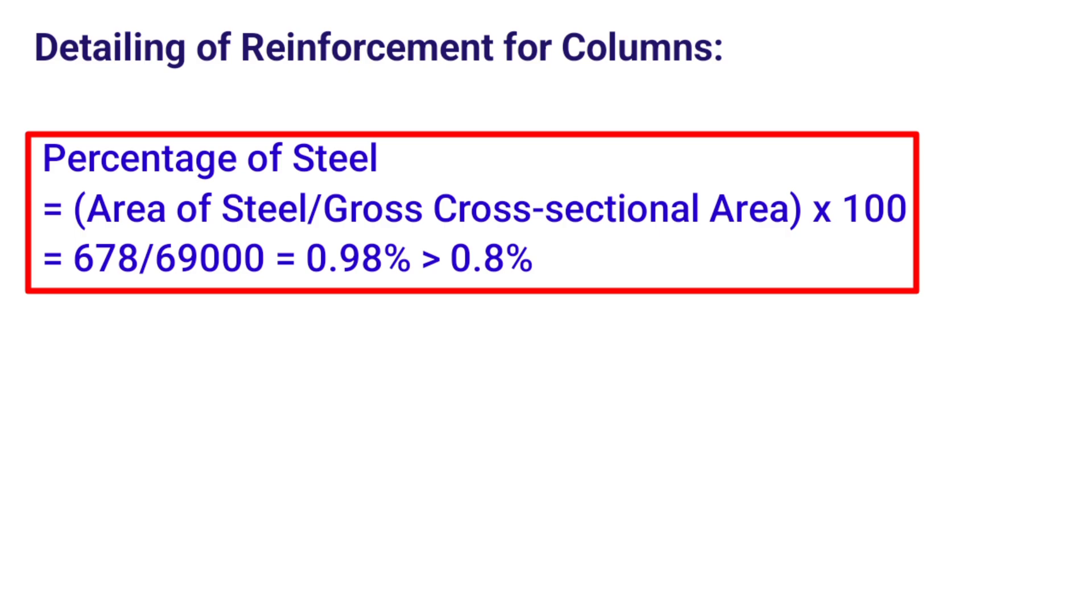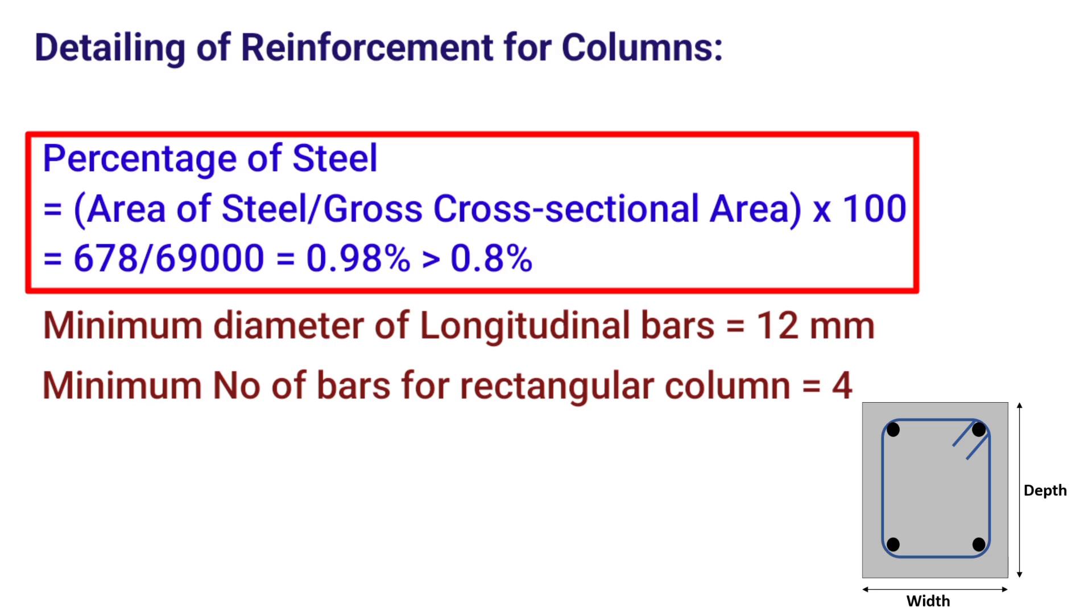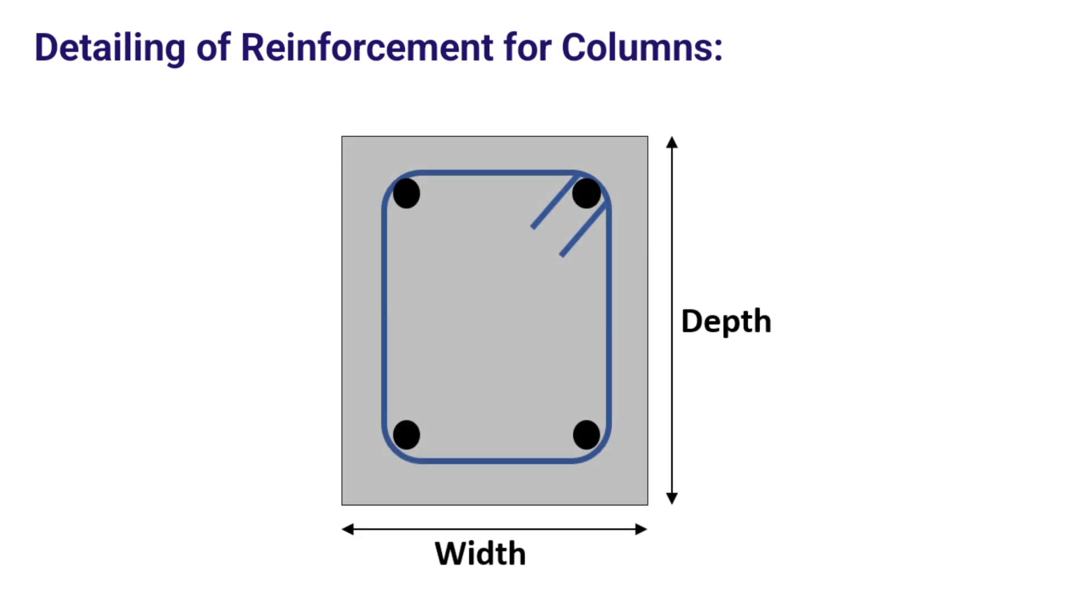It should be noted that the minimum diameter of the bars inside a column shall be 12 mm. Also a minimum of 4 number of bars shall be provided in a rectangular cross section and 6 number of bars to be provided in a circular column. IS 456-2000 also suggests that the spacing of longitudinal bars shall be limited to 300 mm.